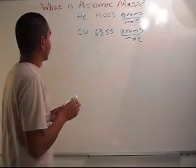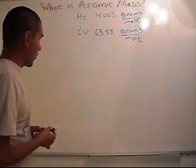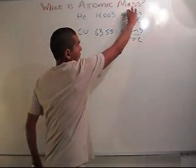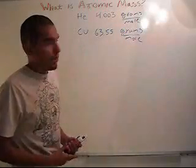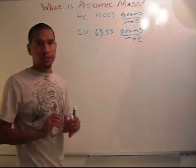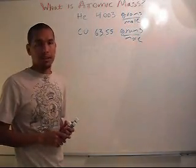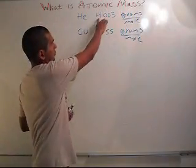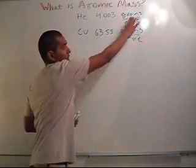Now, what do these units mean? It means that if you have a mole—Avogadro's number, 6.023 times 10 to the power of 23—that equals 4.003 grams.